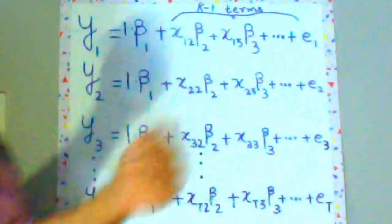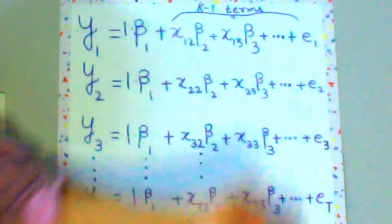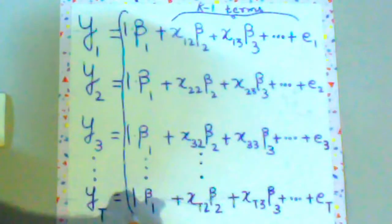So beta 1 here is the intercept term and you have beta 2 to beta k. I mean beta 2, beta 3 and so on till beta k as the coefficient for predictors. And the number of predictors here we have is k-1 and e is your error term. It has t values because we have t values of y.